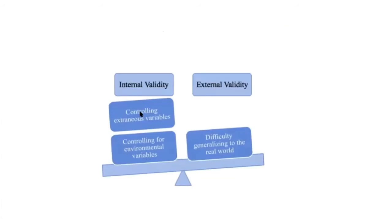Let me tell you about internal validity and external validity. We can make internal validity strong — higher internal validity — by controlling all the environment, so there is less contamination inside the study. That is called internal validity. And external validity is something we can apply in real life: just as the experiment is done, we call that high external validity.